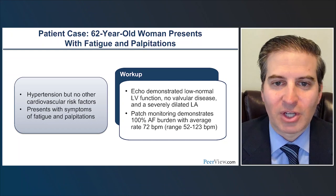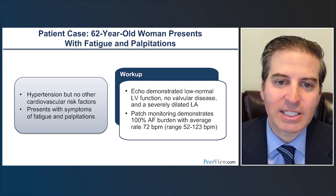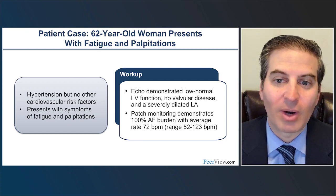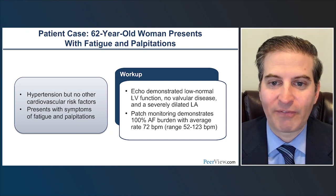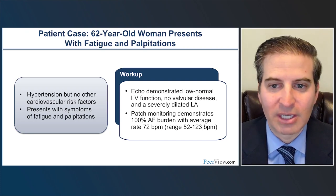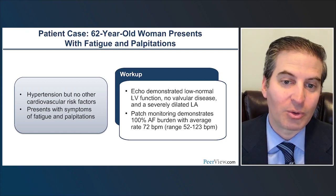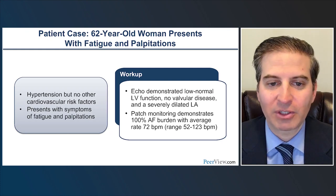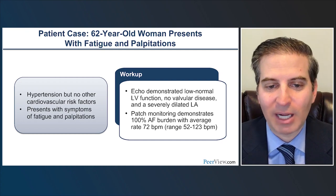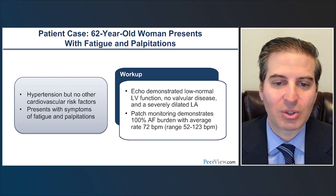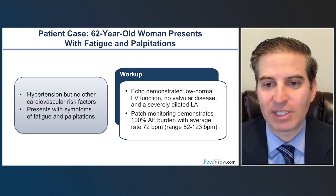I thought it might be helpful to start with a patient case study. This is a 62-year-old woman with hypertension and no other cardiovascular risk factors who presents with symptoms of fatigue and palpitations. Her echocardiogram demonstrates low normal LV function with no valvular disease but a severely dilated left atrium. A patch monitor placed shows 100% AFib burden with an average heart rate of 72 beats per minute.